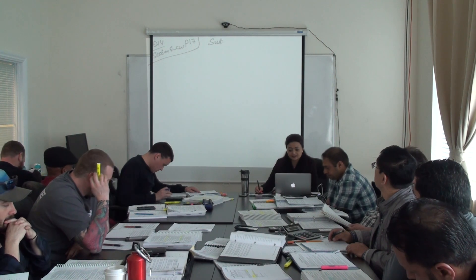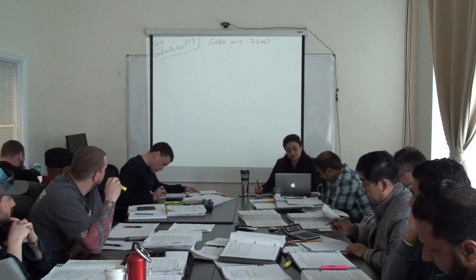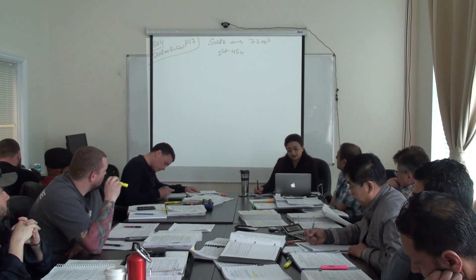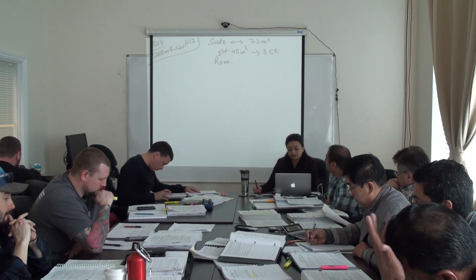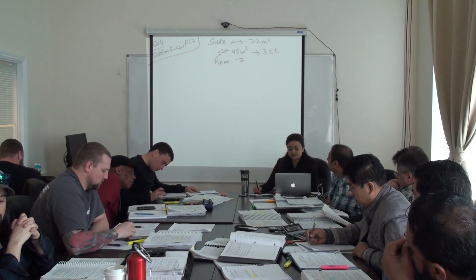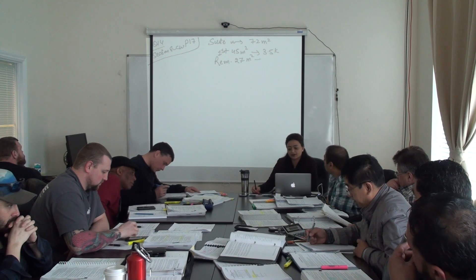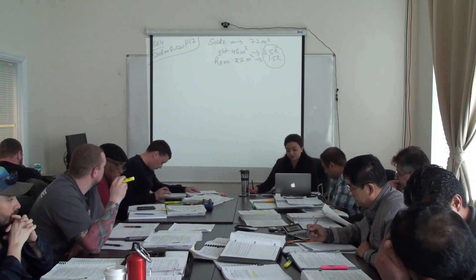How many suites are given? Six. Let's talk about just one single suite. What is the area given? 72 meters squared. So first, 45 — adding 3.5K. And then the remaining how much? 1500. Remaining 72 minus 45 is 27. Perfect, we got 1.5K. So Derek, this becomes 5K for the basic load.